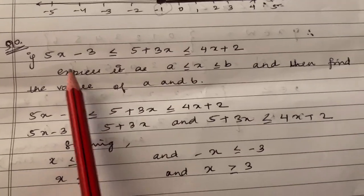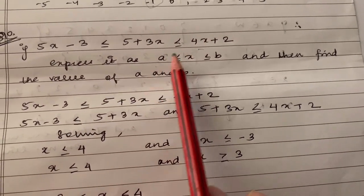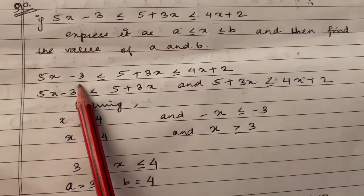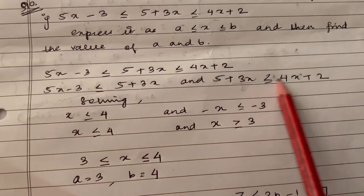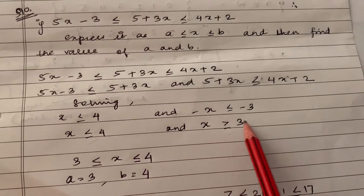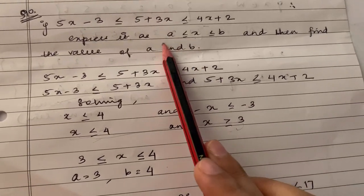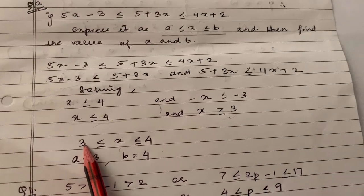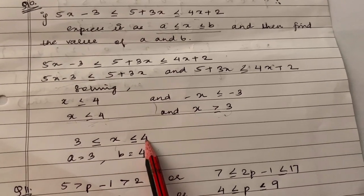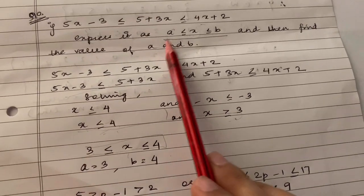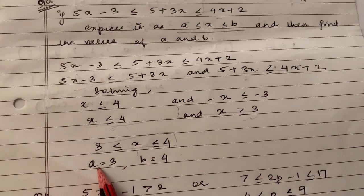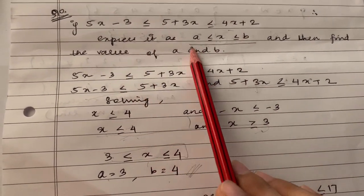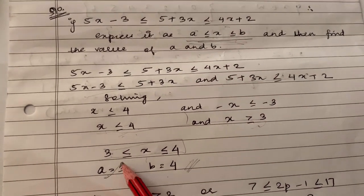Now, expressing the solution in the form a ≤ x ≤ b: simplifying the given linear inequation and splitting into two parts, I get x ≤ 4 and x ≥ 3. Writing in the required form, x is in the middle — 3 comes on the left and 4 on the right, giving 3 ≤ x ≤ 4. Therefore a = 3 and b = 4.